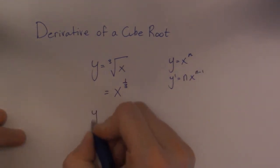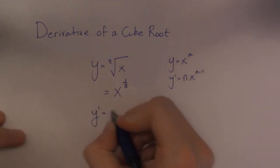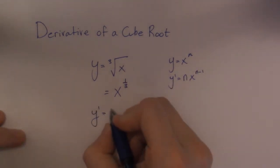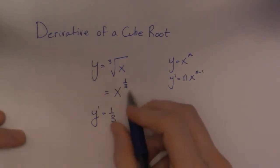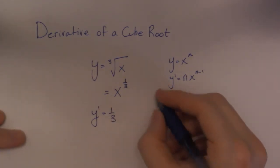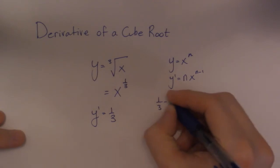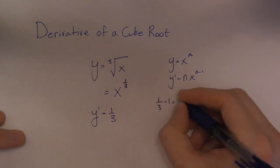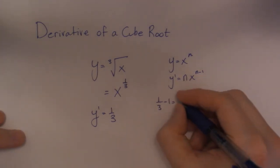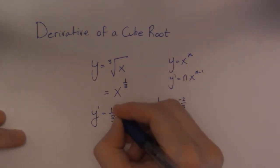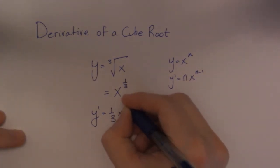So when we go to take the derivative of this, we take the exponent down, it goes in front, and then we subtract off 1. So 1 over 3 subtract 1 is negative 2 over 3, so it becomes x to the negative 2 over 3.